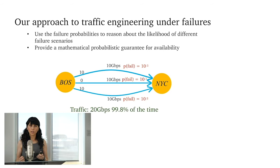And so given uncertainty factor, given the failure probabilities of these different links, what we are looking for is a flow allocation vector, which is how do we divide traffic across these links to satisfy a given traffic demand?